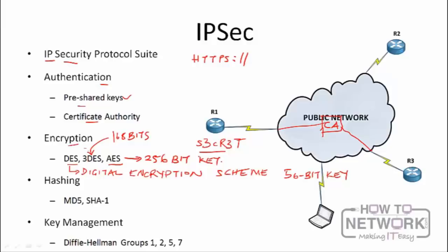For hashing to ensure data integrity, we can use the MD5 algorithm (Message Digest 5) or the SHA-1 algorithm. Regarding key management — the encryption keys are managed on the network using the Diffie-Hellman algorithm. We have Diffie-Hellman groups 1, 2, 5, and 7, which are also part of the IPSec suite and are used for key management.